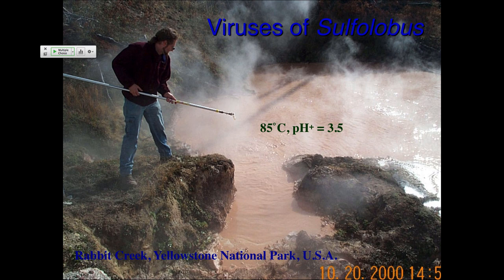This is the beginning of looking for these Crenarchaeal viruses. Basically, we take a sample at the end of a long pole, bring it back to the lab, grow it, and then look to see if there's anything in that sample that makes the organisms we're testing — Sulfolobus — sick. We look in the electron microscope to see what kinds of particles we can find. Seeing if something makes Sulfolobus sick is literally just by putting a little spot on a lawn and seeing if it forms something that looks like plaques.